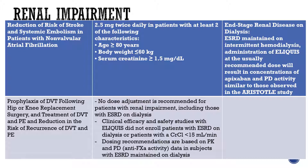However, it is not known whether these concentrations will lead to similar stroke reduction and bleeding risk in patients with end-stage renal disease on dialysis as seen in the ARISTOTLE study. For the indications of DVT prophylaxis following hip or knee replacement surgery, and treatment and recurrence reduction of DVT and PE, no dosage adjustment is recommended for patients with renal impairment, including those with end-stage renal disease on dialysis.